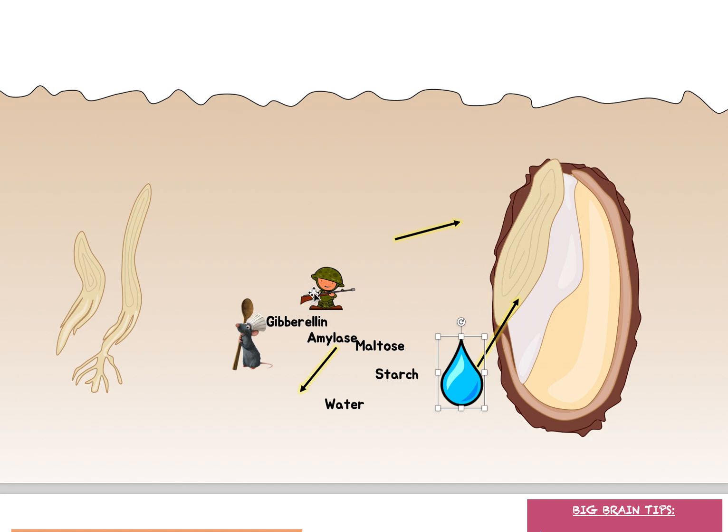Secondly, it's going to activate something called gibberellin. Gibberellin is inside the embryo. So water is going to cause the release of gibberellin. Gibberellin is going to be this little soldier. His name is gibberellin. And gibberellin is a molecule whose job is to activate. So we're going to pretend this soldier is going to wake up somebody. And by the way, this water, if you get poured water on your face, you're going to wake up, right? So that's the same way that this gibberellin gets woken up.